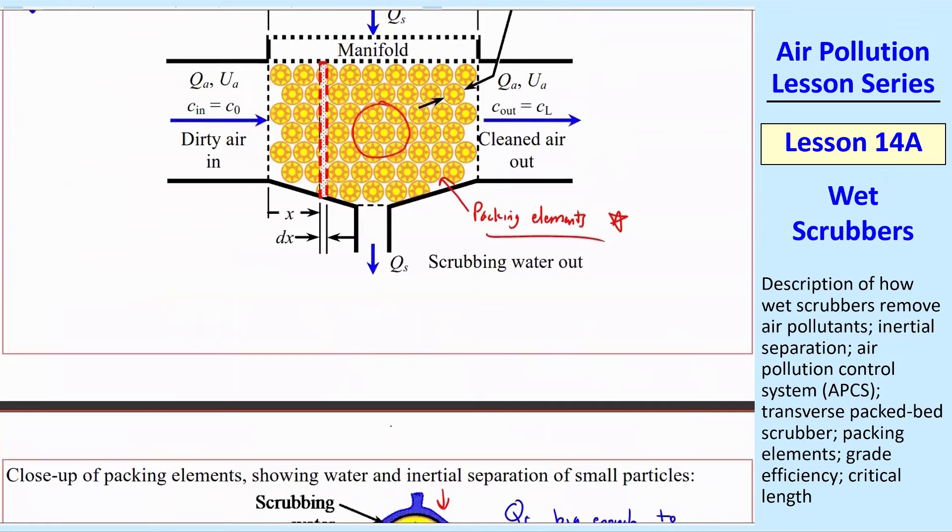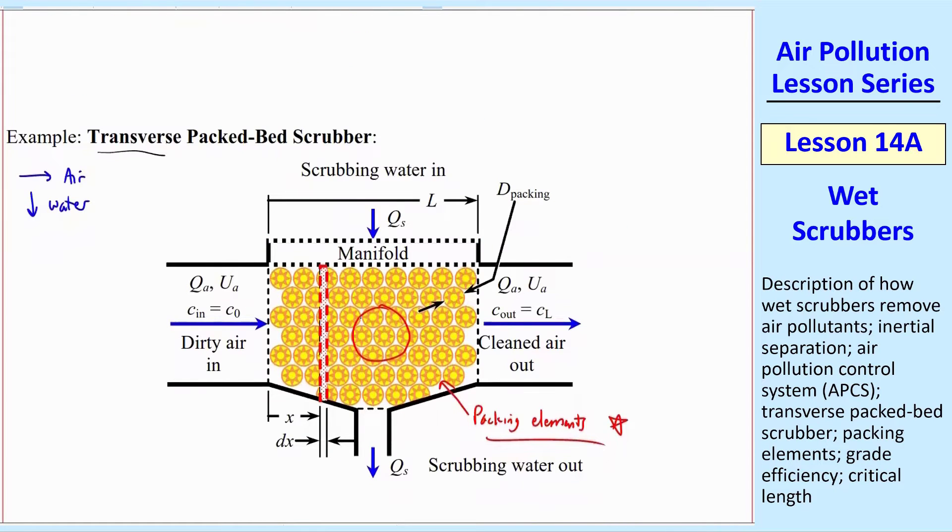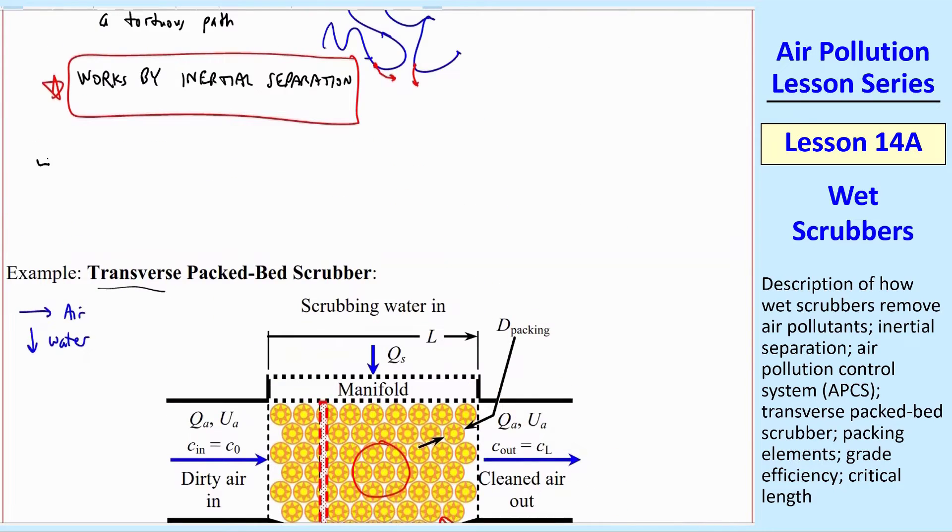Now let's go back and do some analysis. We could derive a differential equation like we did before. The goal would be to find some expression for LC, critical length. It'll be a function of airflow rate, density, viscosity of the air, particle density, particle diameter, DC. This is the characteristic diameter of the packing element, little rod-like things that I showed you in some of these examples.